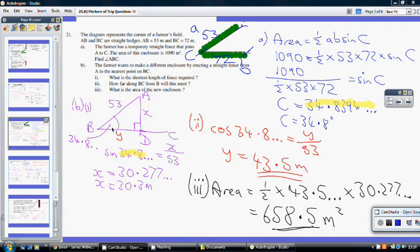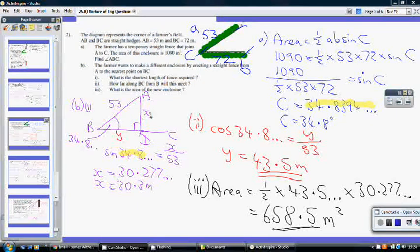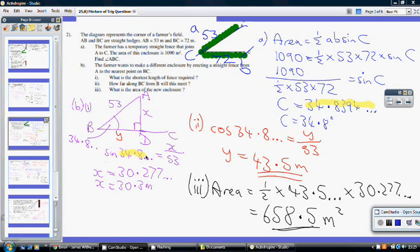So, we know this angle here is 34.8394 from part A. We know the hypotenuse is 53, so the length of the shortest length of fence required, this length from A to D, which I'm calling X, is my unknown. So, I want the opposite. I know the hypotenuse, so I'm going to use sin. So, sin 34.8394 dot dot dot dot equals my opposite X divided by my hypotenuse is 53. Multiply both sides by 53, and I get X being 30.277 dot dot dot, which is 30.3 metres to one decimal place.